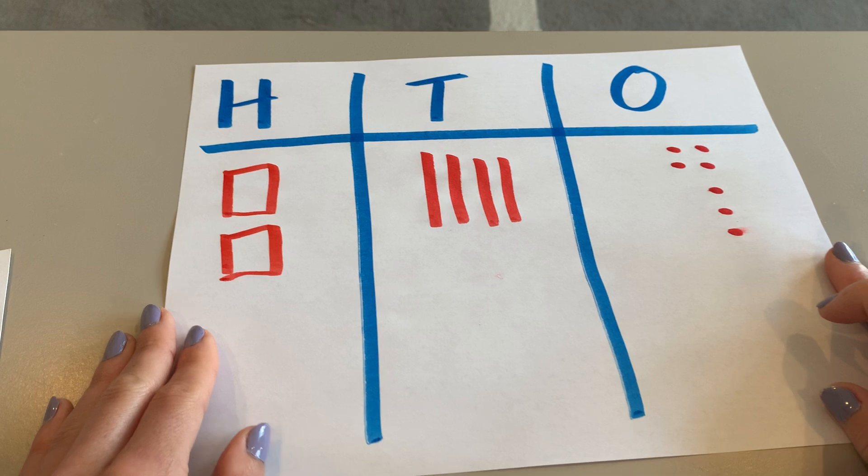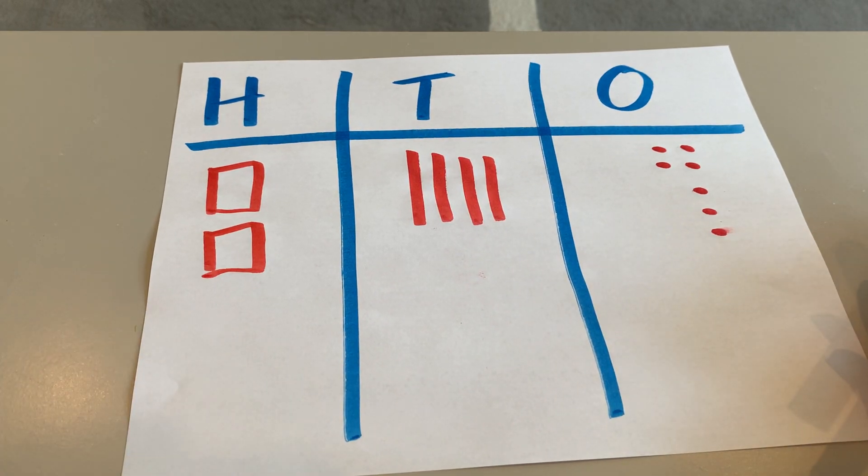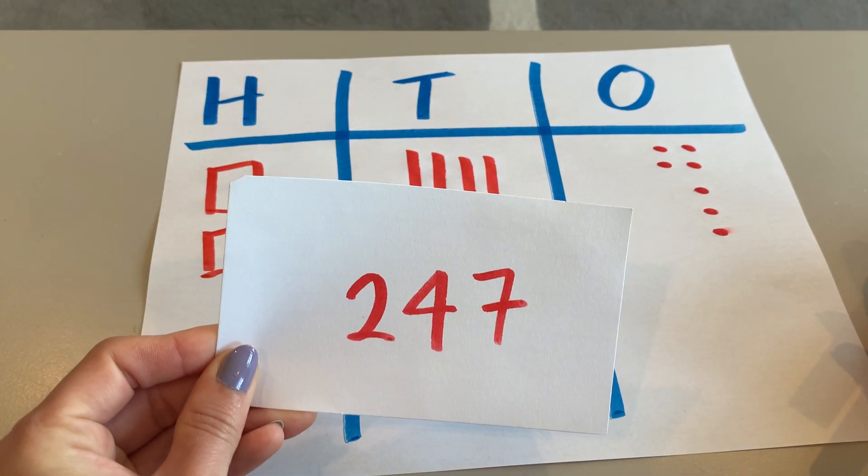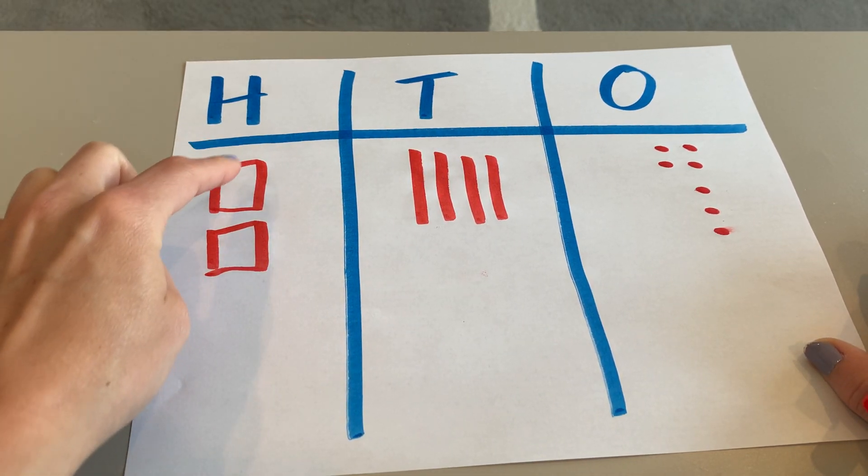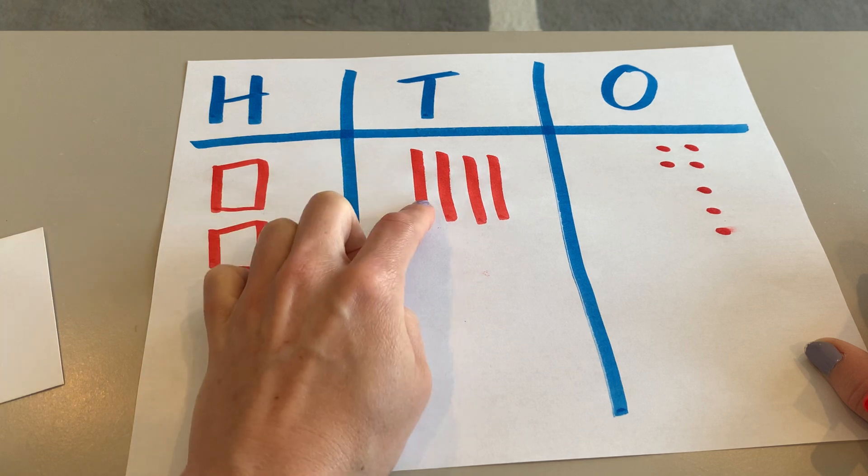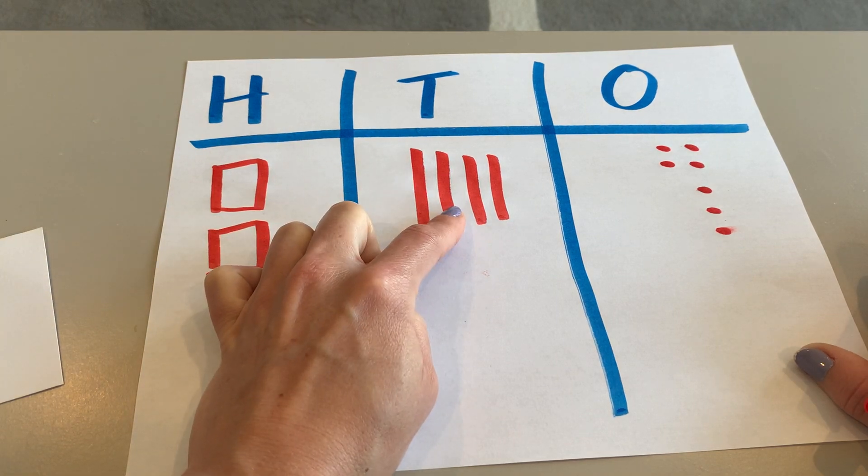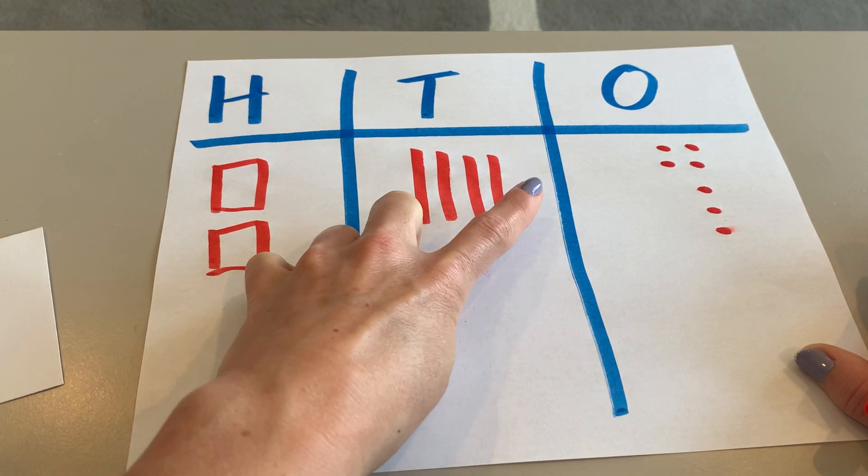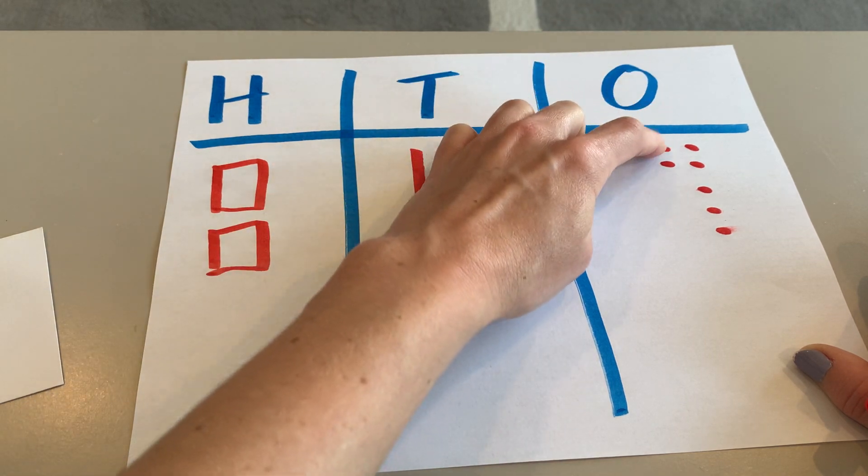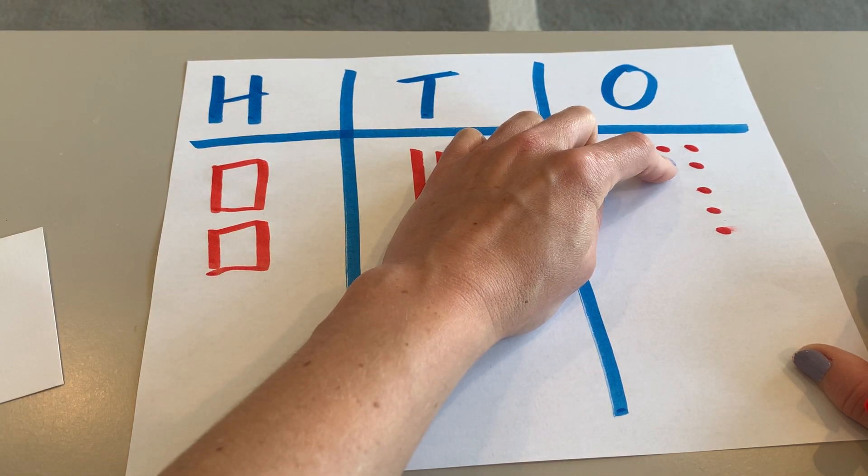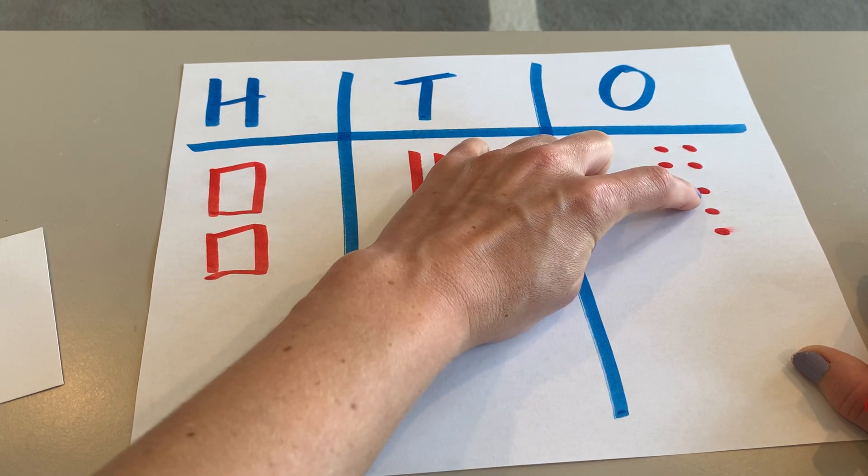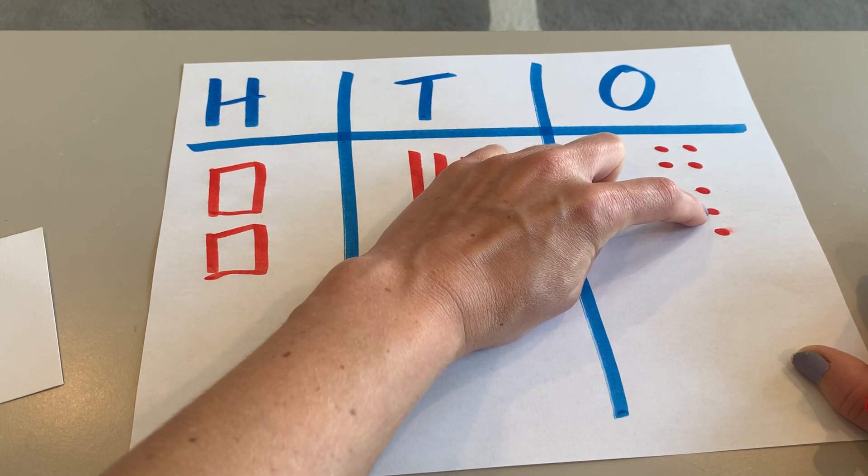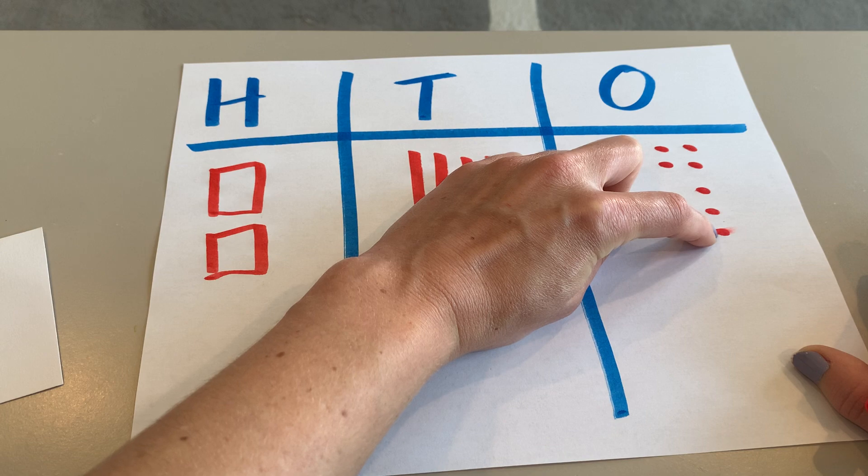And now I've drawn my three digit number 247. Two hundreds. Let's see, 100, 200, 210, 220, 230, 240, 241, 242, 243, 244, 245, 246, 247.